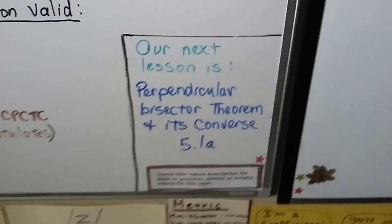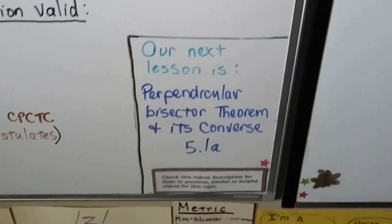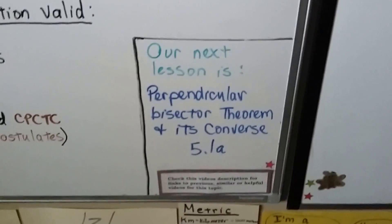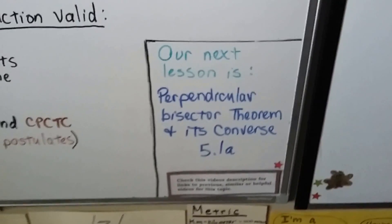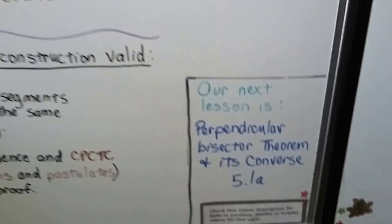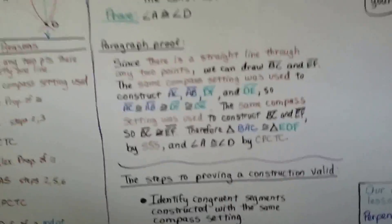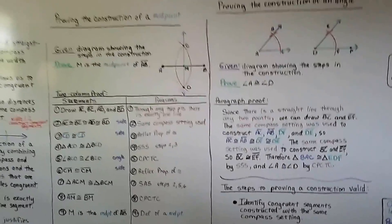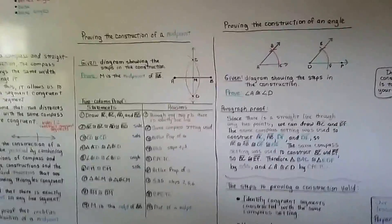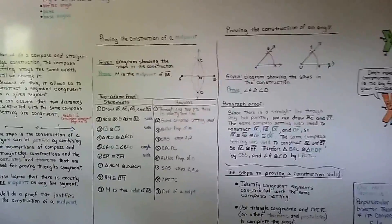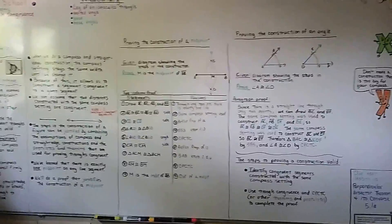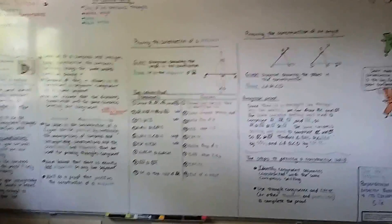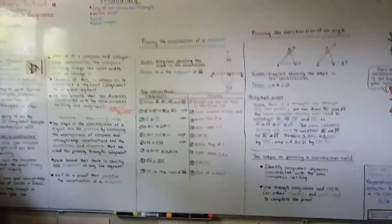Our next lesson is Chapter 5: Perpendicular Bisector Theorem and its Converse, section 5.1a. If you don't remember how to make congruent segments or angles, you need to practice that. I will see you next time — I hope you have a great day!